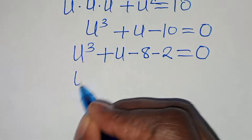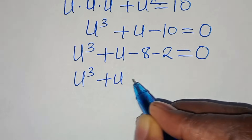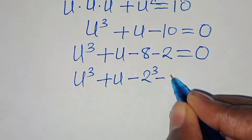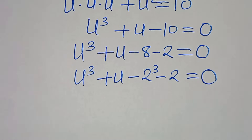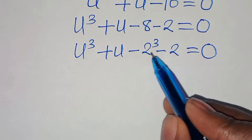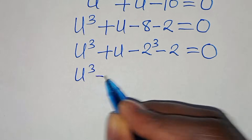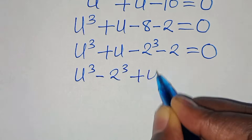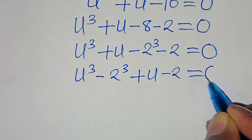We have u³ + u - 8, where 8 is 2 to the power of 3, minus 2, equals 0. Rearranging, we have u³ minus 2³, plus u minus 2, equals 0.